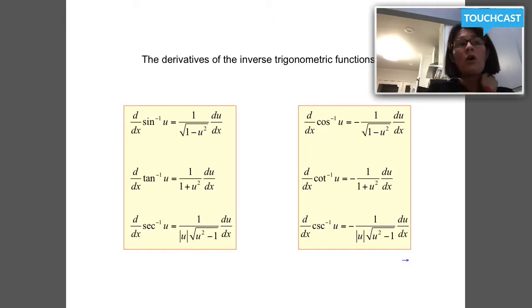Notice that co-functions, inverse co-functions, derivatives are opposites. You'll see inverse secant has a positive derivative, there's no negative in the rule, and then the inverse cosecant has a negative built in the rule. On the right-hand side there's three negatives, left-hand side three with no negatives.